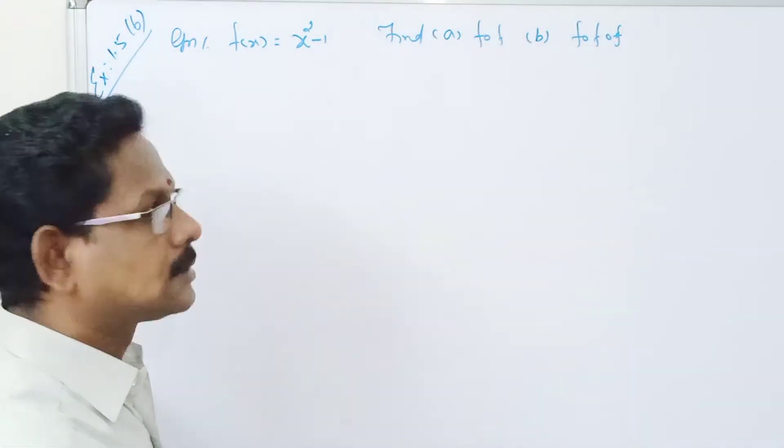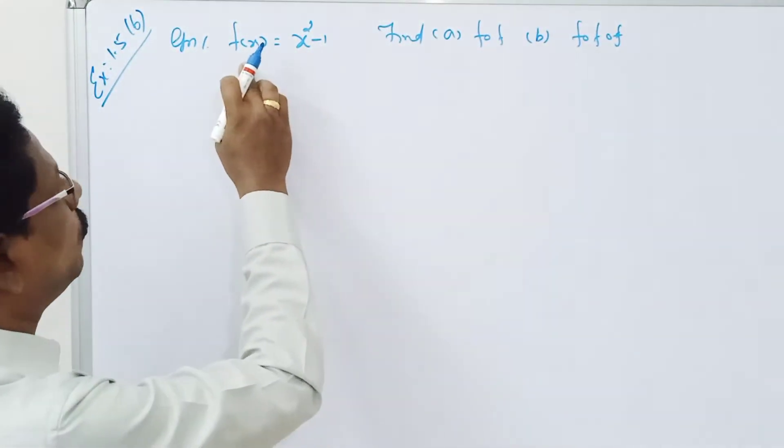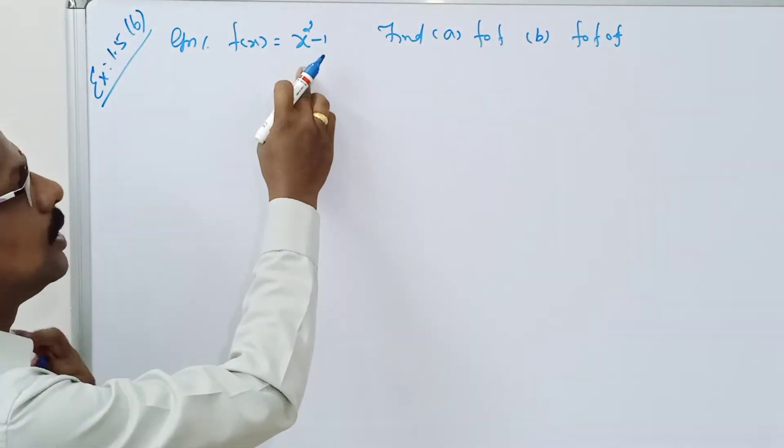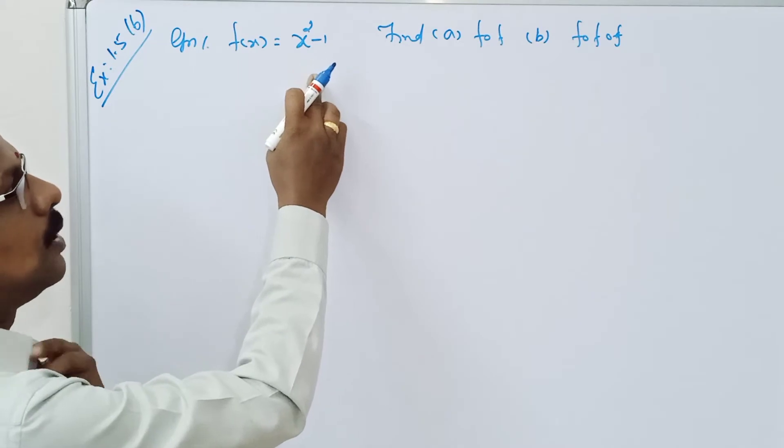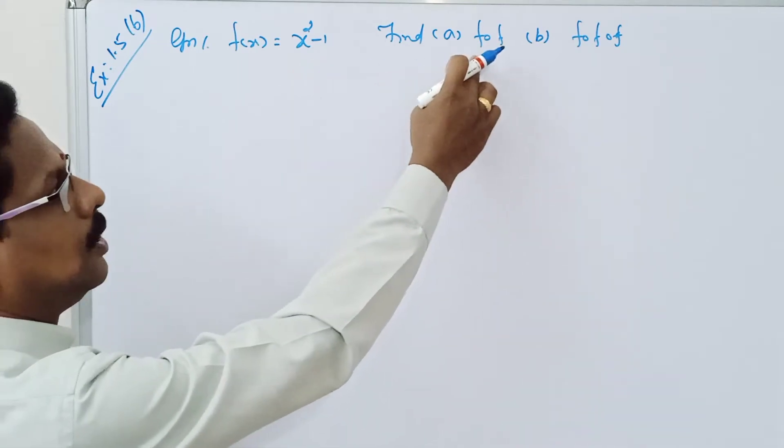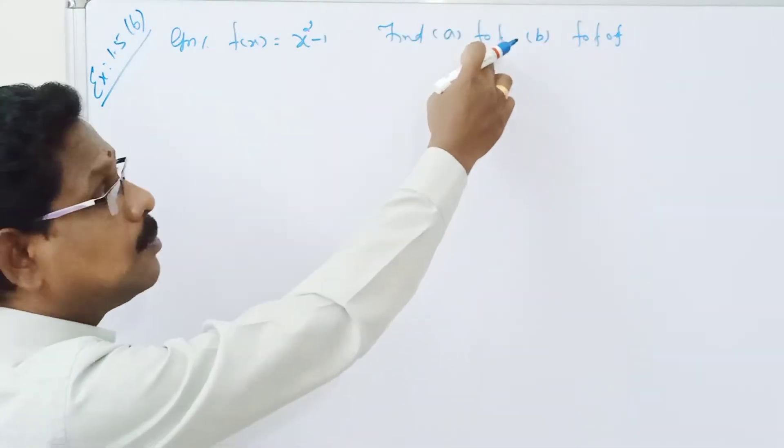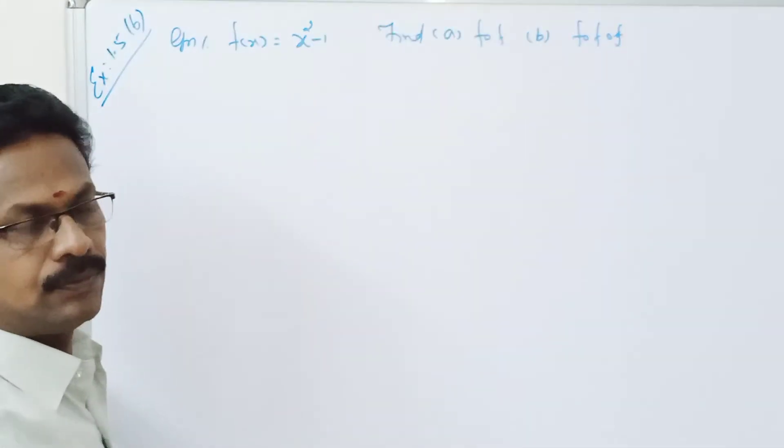Welcome to Mercury Maths. f of x is equal to x squared minus 1. We need to find f composition f.